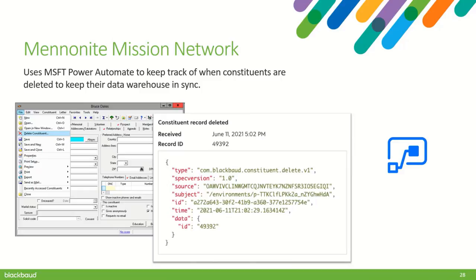The next example is from Ben Regier from Mennonite Mission Network, who's actually doing a session at DevCon. He's using Power Automate to listen to webhook messages to trigger a workflow to keep their data warehouse in sync. He uses a flow in Power Automate to subscribe to the constituent deleted event so that Power Automate can delete that same record in their data warehouse. This was actually impossible before webhooks because RANXT doesn't keep track of deleted records — you can't get a deleted record from Sky API. The only way they knew records were deleted was if they received an error when trying to update that record, which might be quite some time after deletion. With webhooks, they can now delete that record in their data warehouse the moment it's deleted in RANXT.